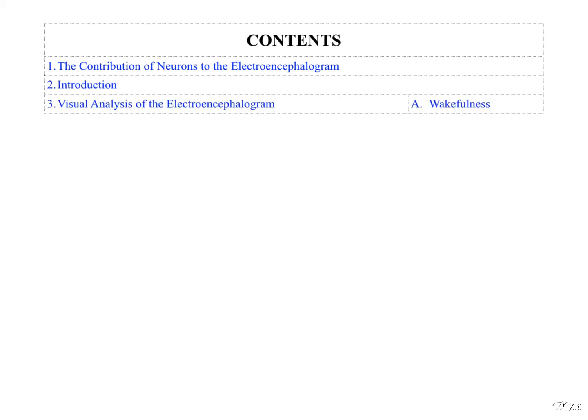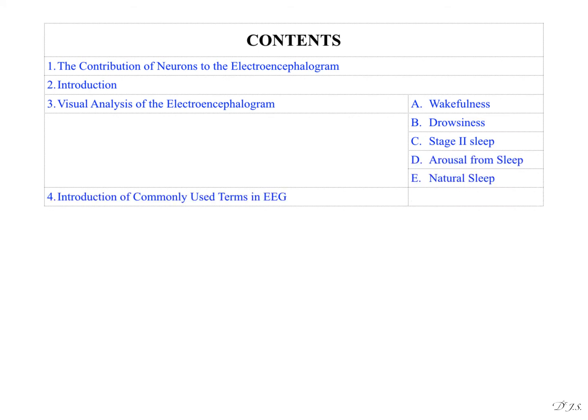introduction, visual analysis of the electroencephalogram will contain wakefulness, drowsiness, stage second sleep, arousal from sleep, natural sleep. Fourth is introduction of commonly used terms in EEG.